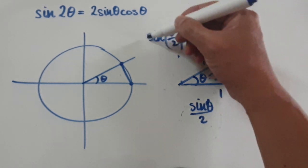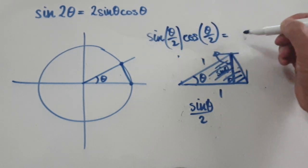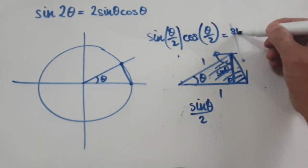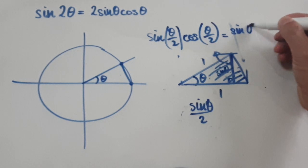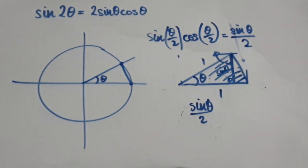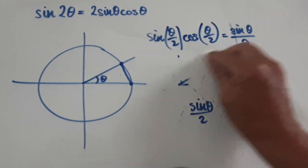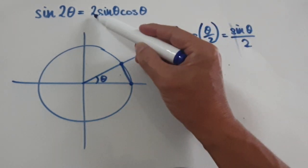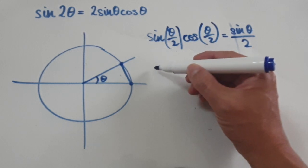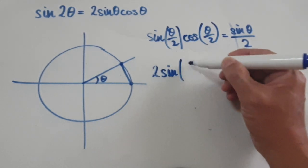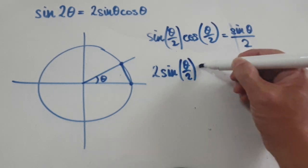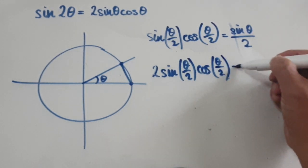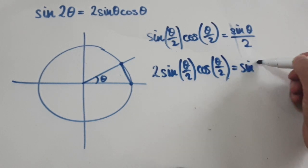So now we can set the two expressions equal to each other. This triangle is the same as this triangle, so: sine(theta/2) times cos(theta/2) equals sine(theta) over 2. Times both sides by 2, so that gives us 2·sine(theta/2)·cos(theta/2) equals sine(theta).